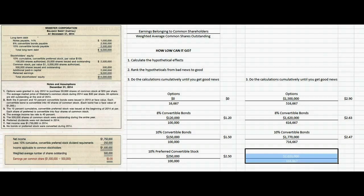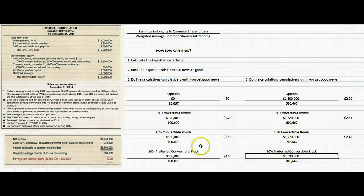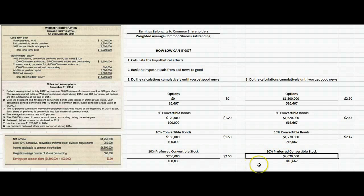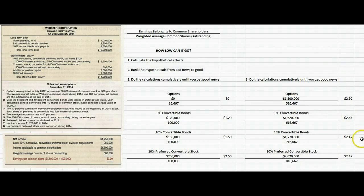Let's do the last one: 10% convertible preferred. We start with $1,770,000 and add the $250,000, because if these holders had converted their preferred to common stock, we wouldn't have owed them the preferred dividend. So $1,770,000 plus $250,000 gives us $2,020,000. In the denominator, 716,667 plus 100,000 gives 816,667 shares. We do that arithmetic and we've plateaued — we're still at $2.47. Since this is good news rather than bad, we stop doing the calculations.